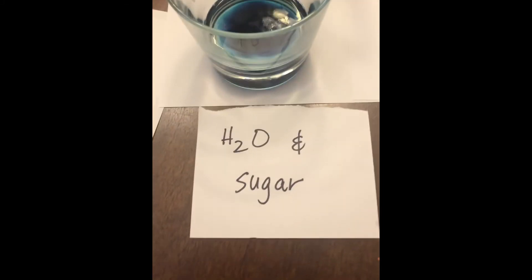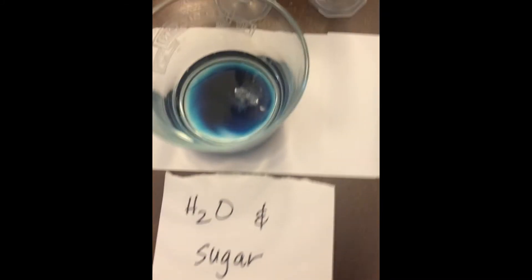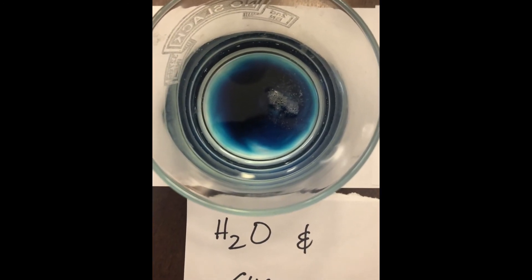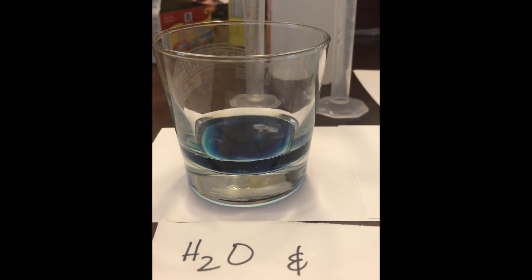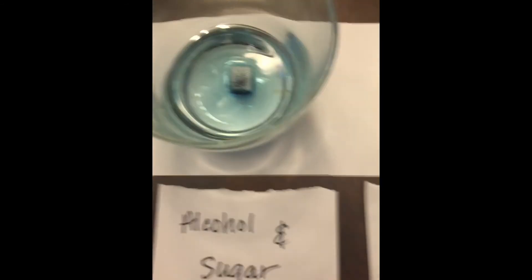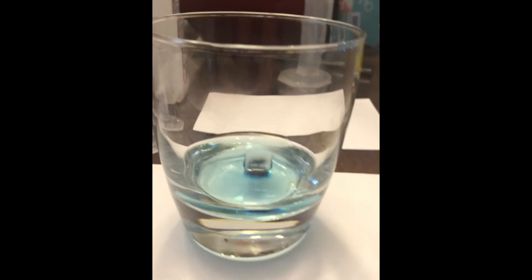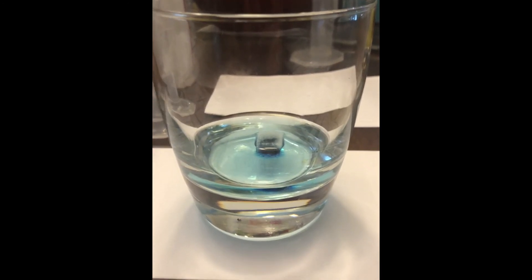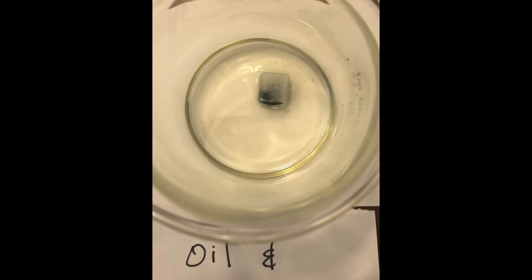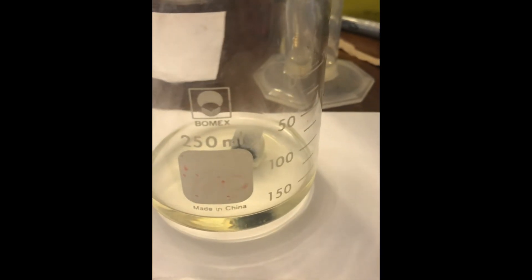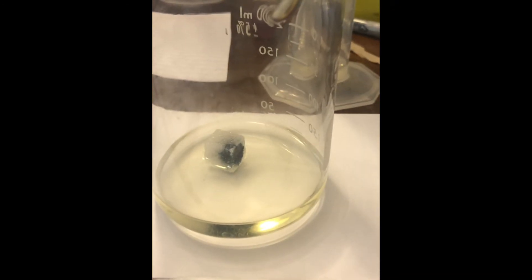All right ladies and gentlemen, this is the water and sugar. I put an index card underneath it so we could see in the video. This is what the water and sugar looks like. If I go to the side, it looks like this. The alcohol and sugar, this is what we're seeing, and if you go to the side, it looks like that. And the last one is the oil and sugar, and if you go to the side, it looks like that.